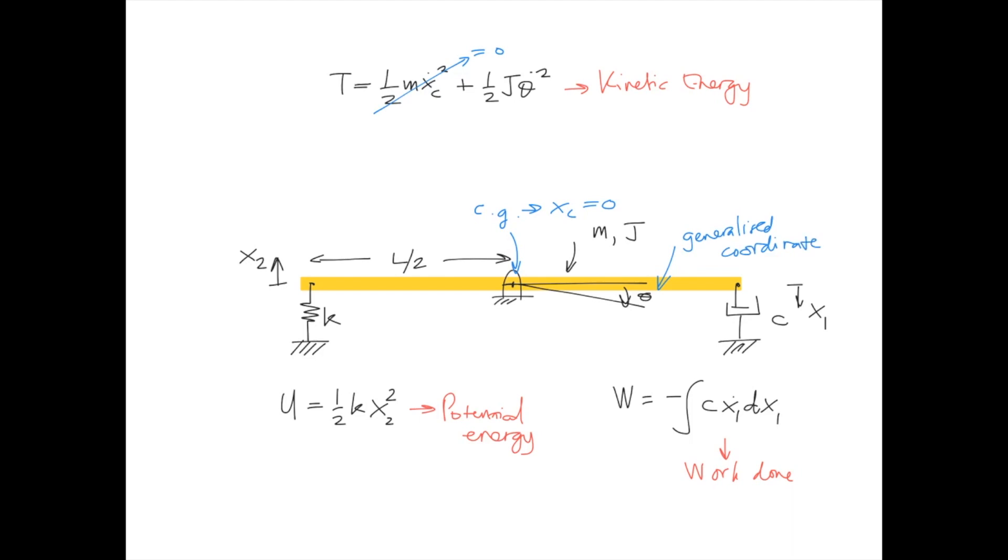The kinetic energy is already in theta, so this is fine. We don't have to do anything with the kinetic energy. But the potential energy here is as a function of X2 and the work done is as a function of X1. So what we have to do next is to find the relations between X1 and X2 with theta.